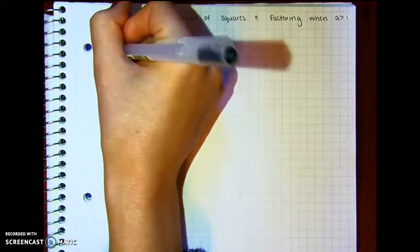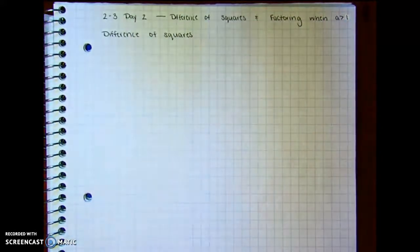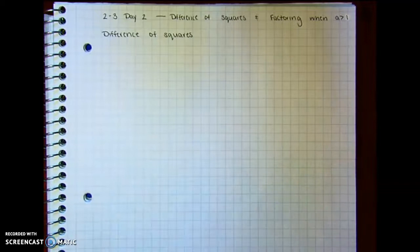So remember the difference, or what a square is. A square is a number that's a perfect square like 9, right, the square root of 9 is 3.